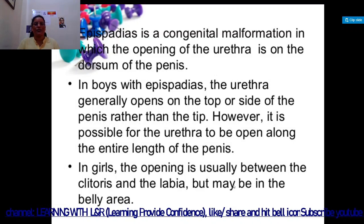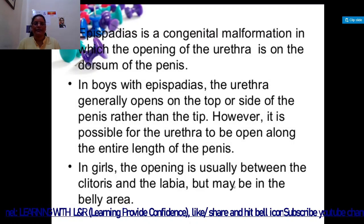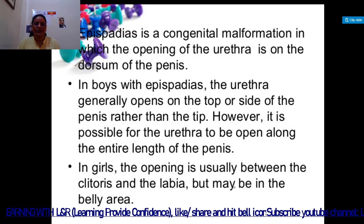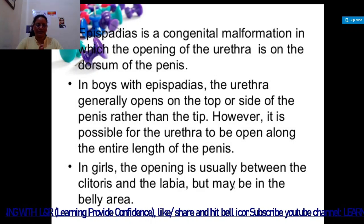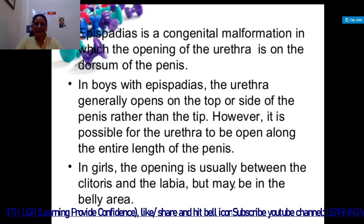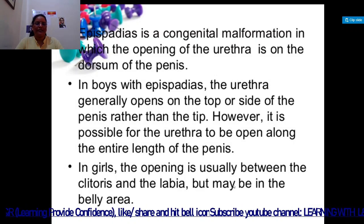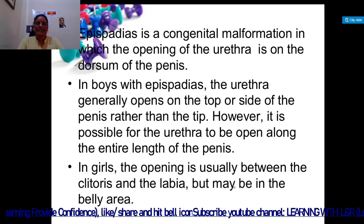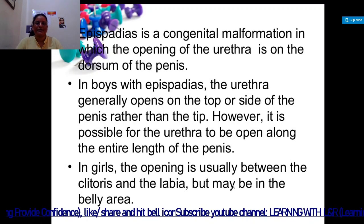In males with epispedias, the urethra generally opens on the top or side of the penis rather than the tip. However, it is possible for the urethra to be open along the entire length of the penis. In girls, the opening is usually between the clitoris and the labia, but may be in the belly area.